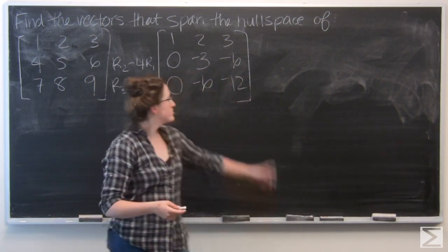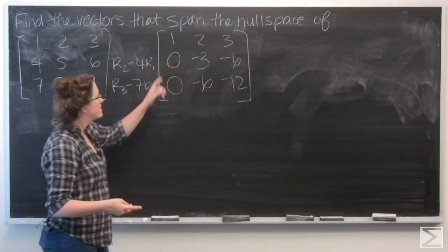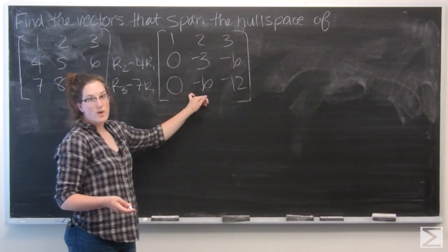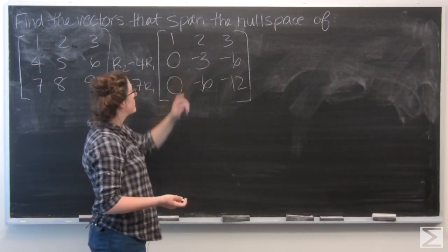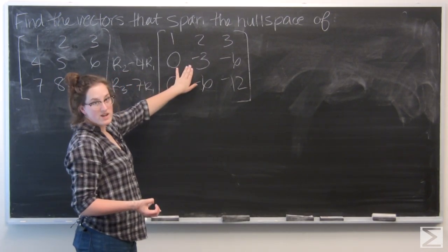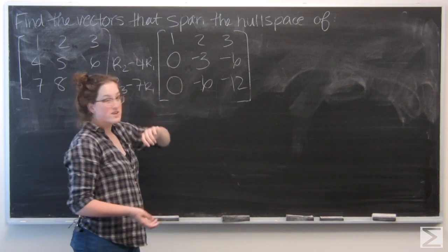So from here I see that I have two rows that are multiples of each other. So I'm going to reduce this row by a factor, or reduce both rows. The second row by a factor of 3 and the third row by a factor of 6.